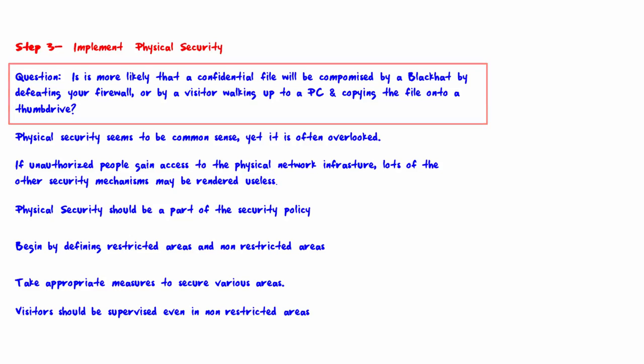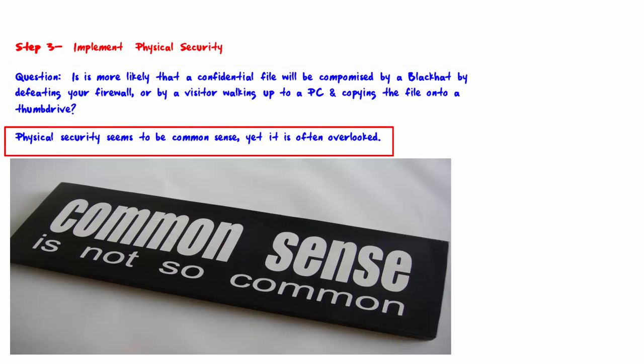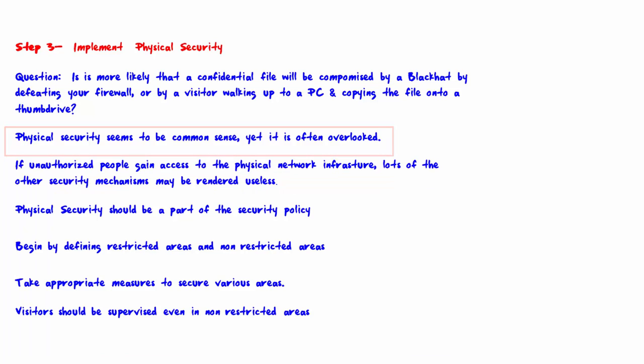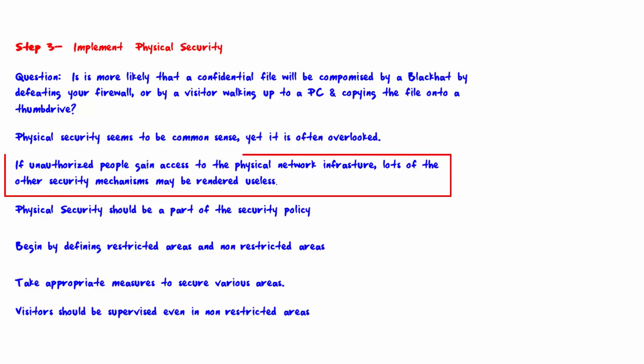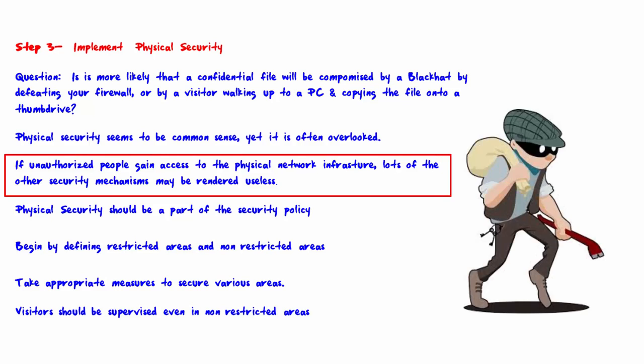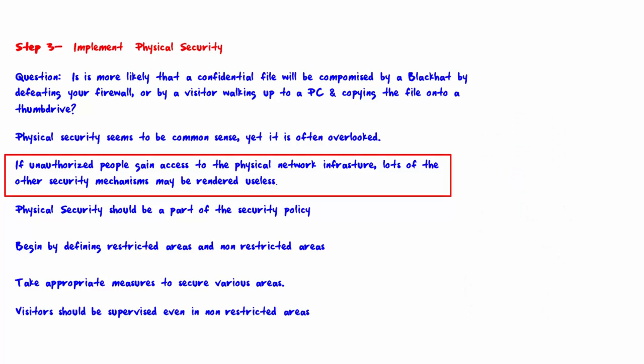This underscores why you need to implement physical security. Physical security may seem to be common sense, yet it is often overlooked. If unauthorized people gain access to the physical network infrastructure, lots of other security mechanisms may be rendered useless. Physical access suggests at least the possibility of being able to bypass other security mechanisms.